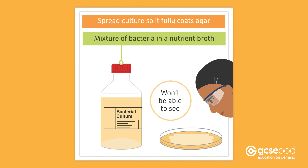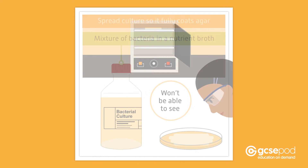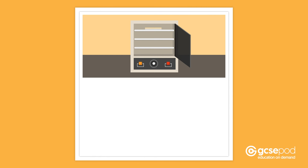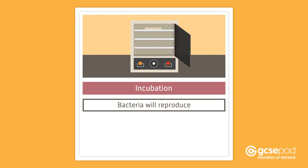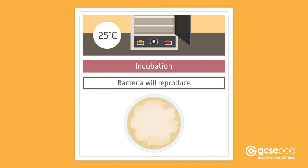You will not be able to see the bacteria as they are so small. However, if you place the dish in a warm place, called incubation, the bacteria will reproduce to form many, many more. Remember, the warm place in your school should be 25 degrees Celsius. These large groups can be seen and the surface of the agar will have a milky or cloudy appearance.